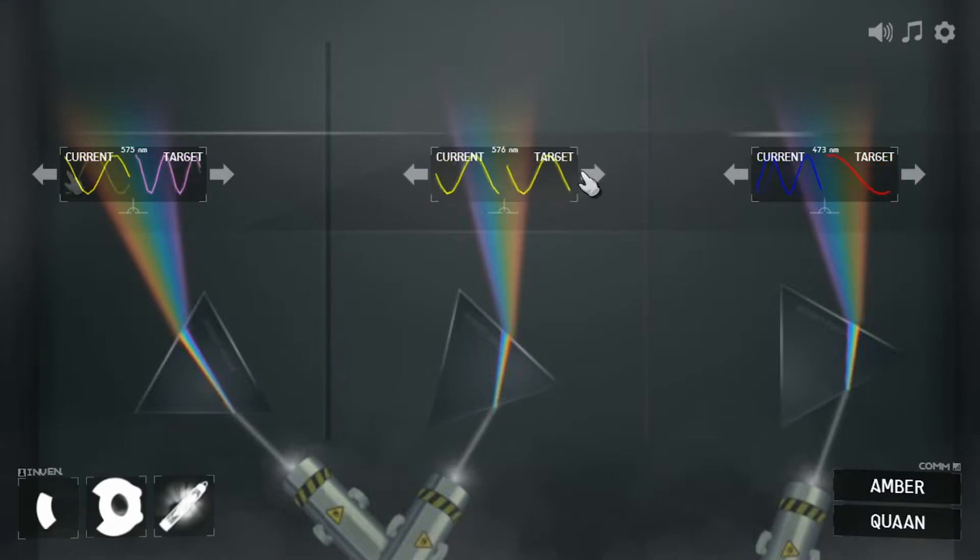It looks really simple but there's a fair bit of science in this game. The different colours of light really do have different wavelengths. Red is longest and violet is shortest.